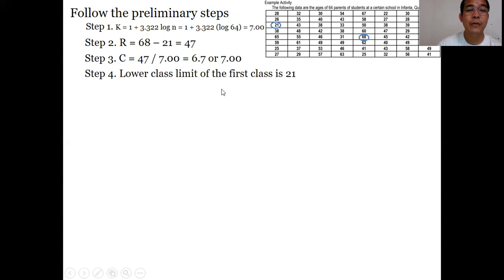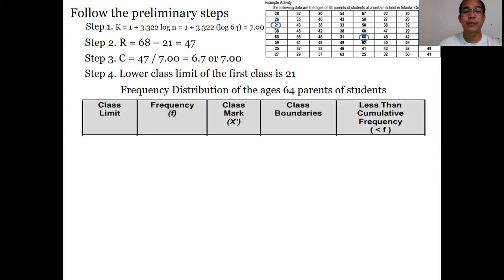For step number 4, the lower class limit of the first class is 21. Therefore, we have to start at 21. We will now construct the frequency distribution. Our first column would be class limit, second is frequency, third is the class mark, fourth is the class boundaries, and fifth is less than cumulative frequency.